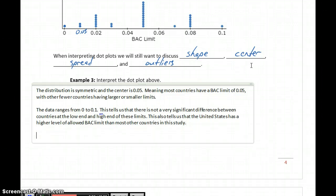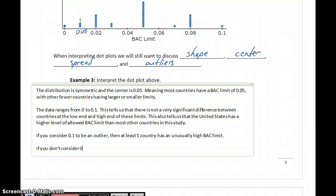The last piece that we want to interpret is about outliers. This would come down to some judgment again. Is 0.1 an outlier? We do have a little bit of a gap between 0.08 and 0.1. That's not a huge gap, but there's less of a gap at the low end. So I'm going to say, if you consider 0.1 to be an outlier, then at least one country has an unusually high BAC limit. If you don't consider 0.1 to be an outlier, then all countries fall within a normal range for BAC limits. So we're saying there are no countries that have extremely high or extremely low limits for blood alcohol content.